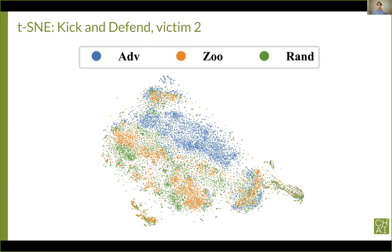The activations induced by the adversary, shown in blue, are consistently the least likely. The random baseline in green is slightly more probable. This suggests that although the adversarial policies do induce off-distribution activations, this alone isn't sufficient to explain their performance, because the random baseline doesn't do very well in most environments. We also used t-SNE to visualize activations of the victim's policy network, fitted with activations from the adversary in blue, a normal zoo opponent in orange, and the random baseline in green.